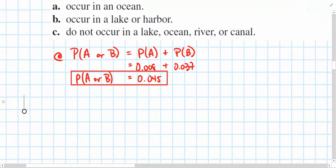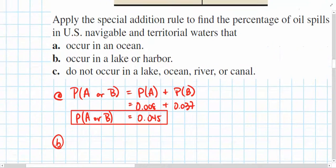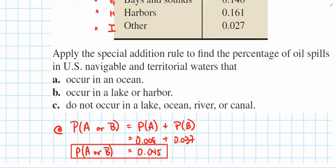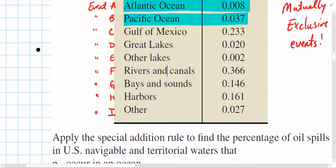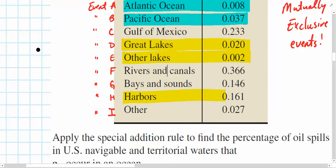About a 4.5% chance. Part B, the probability that an oil spill will occur in a lake or a harbor. So, this time, lakes are event D, E, or H.